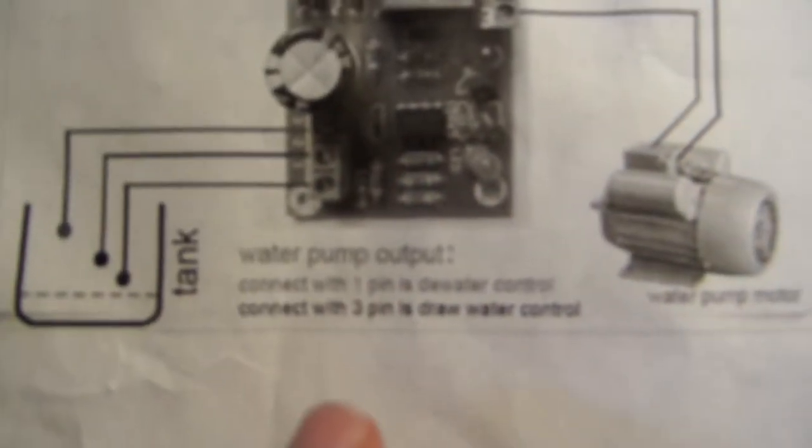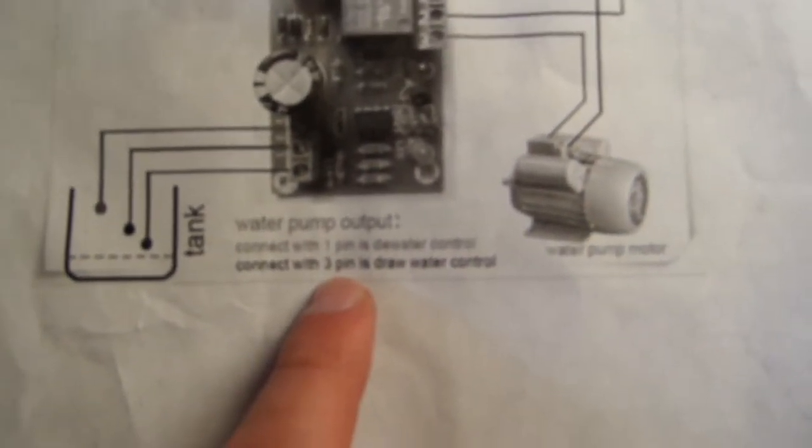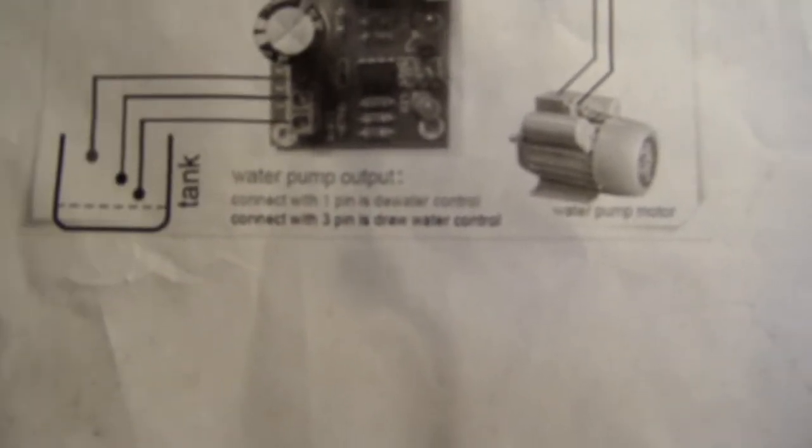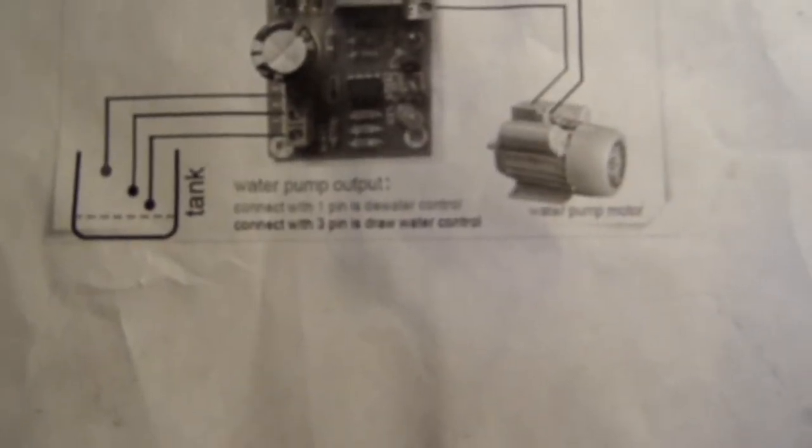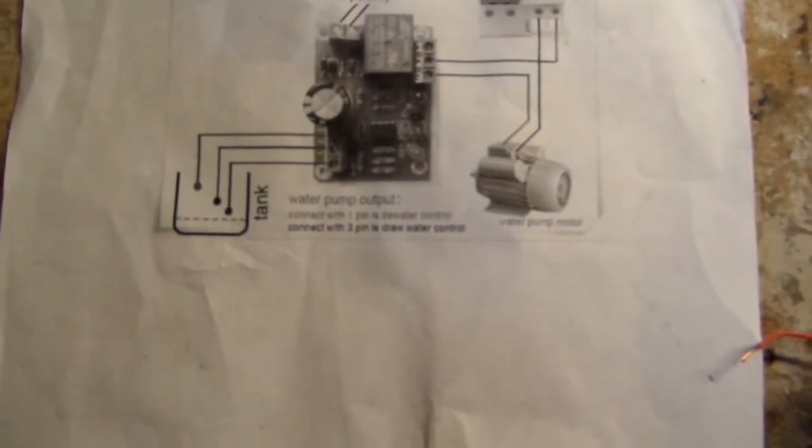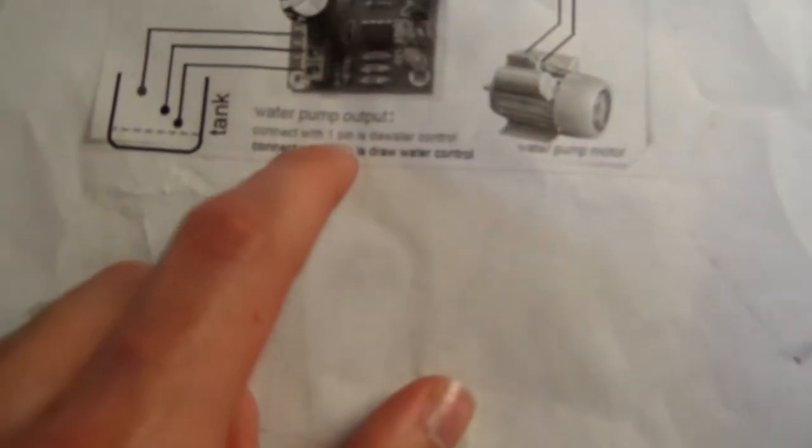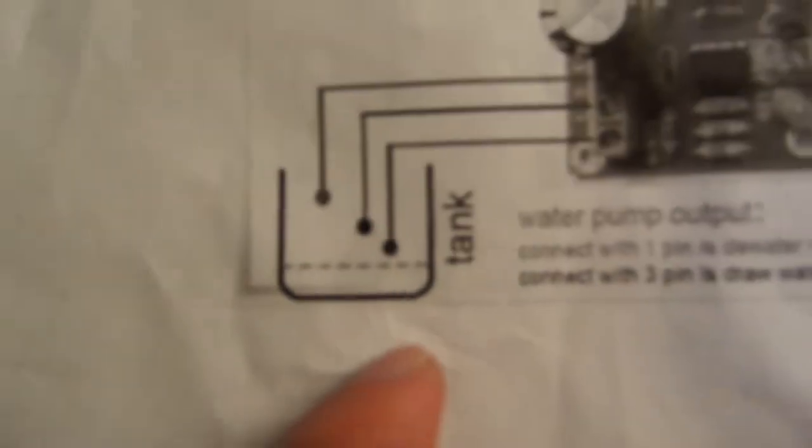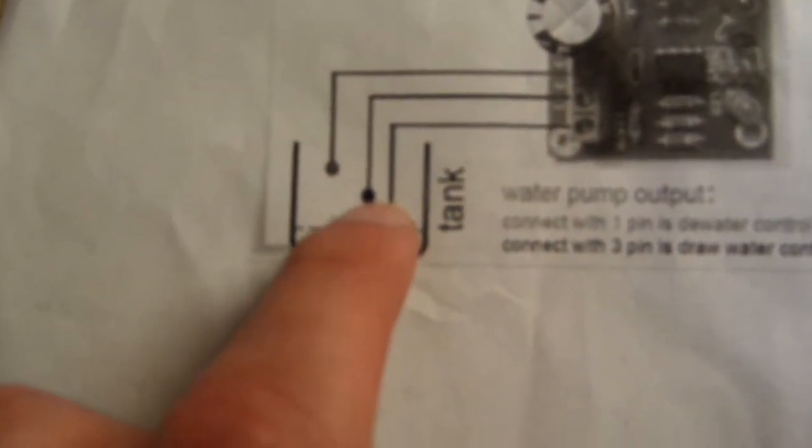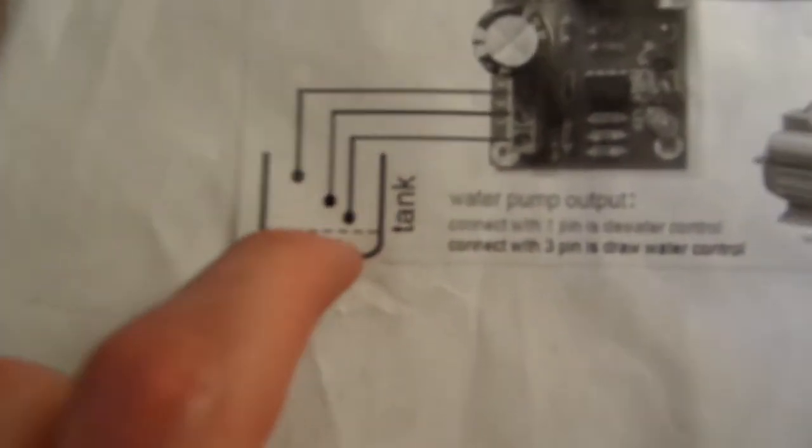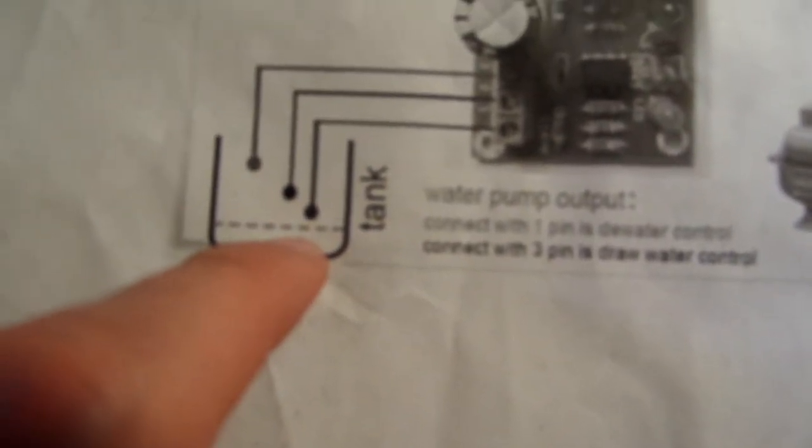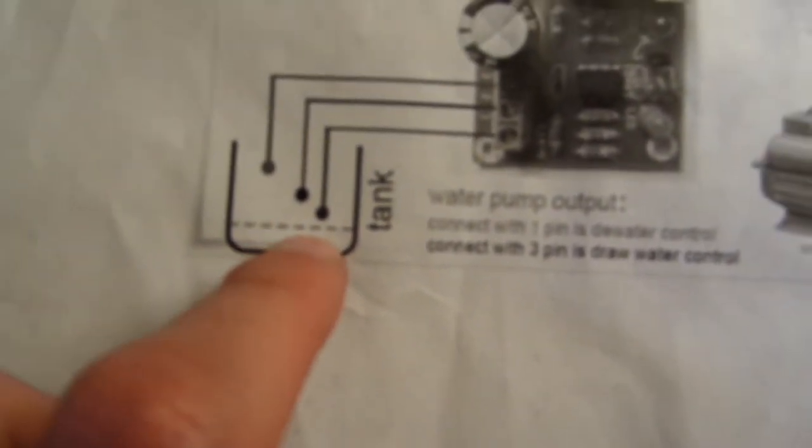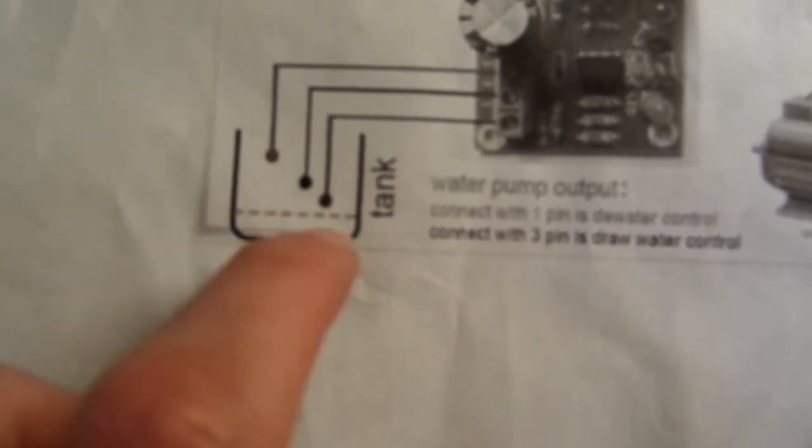So as you can see there are pins one, two, and three. It says connect - pin one is water control, pin three is draw water control. So you can kind of see what that means here. That means say this is the tank, this is the middle lead.